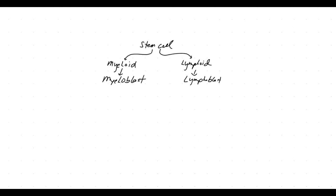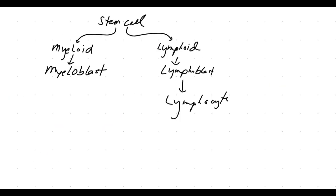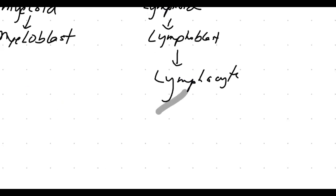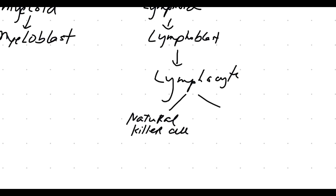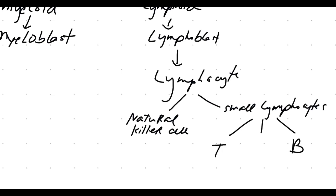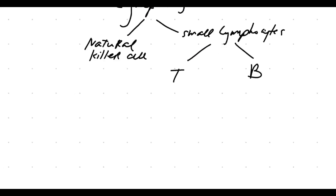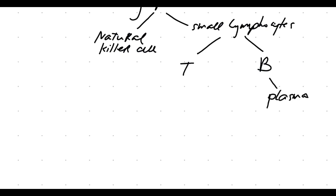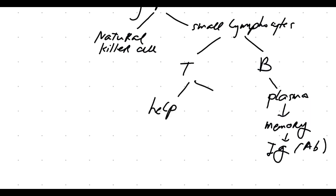From being a lymphocyte, we're going to finish this branch up because we're going to spend a lot of time on the myeloblast. The lymphocyte becomes a natural killer cell and also a small lymphocyte. The small lymphocytes are your T and B cells. B cells become your plasma cells, and when activated become your memory cells and then your immunoglobulin antibody.